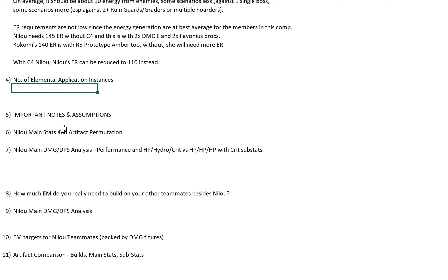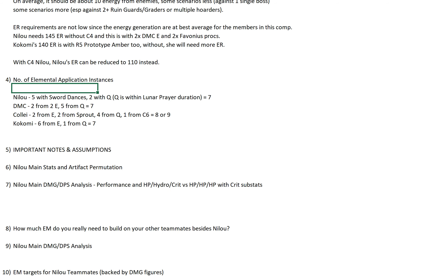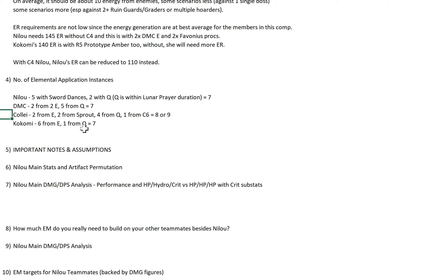Now let's talk about the number of elemental application instances, because that's important in order to know how to calculate Bountiful Core damage. Nilo generates 5 with her Sword Dances, and 2 with Q because Q is within Lunar Prayer duration — that's why there's only 5 with the Sword Dances. Total 7. DMC: 2 from 2E, 5 from Q equals 7. Note that it starts from 0 — at the 0 mark you always have 1 application. It's the same for Collei by the way. For Collei Q it's 4 because when your Collei first hits at 0 seconds it does trigger a reaction: 0, 3, 6, 9 — that's why it's 4.